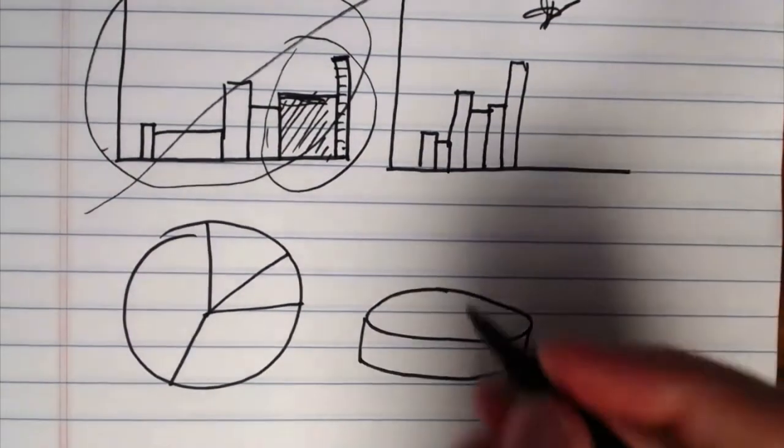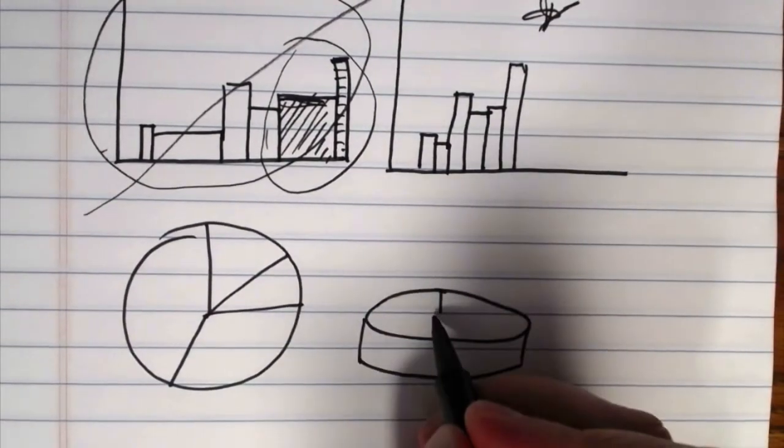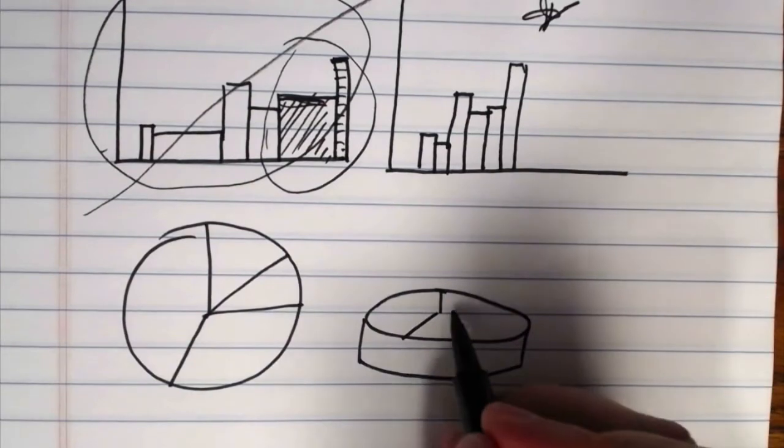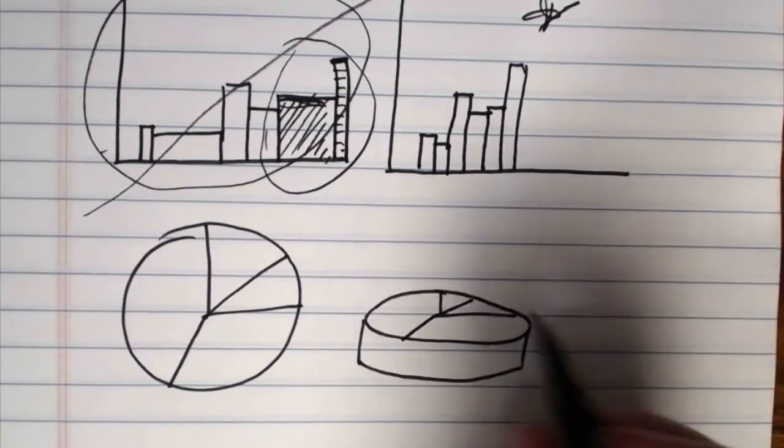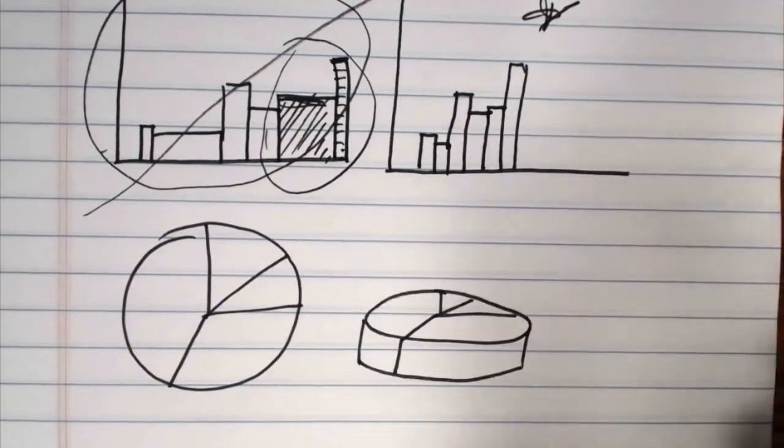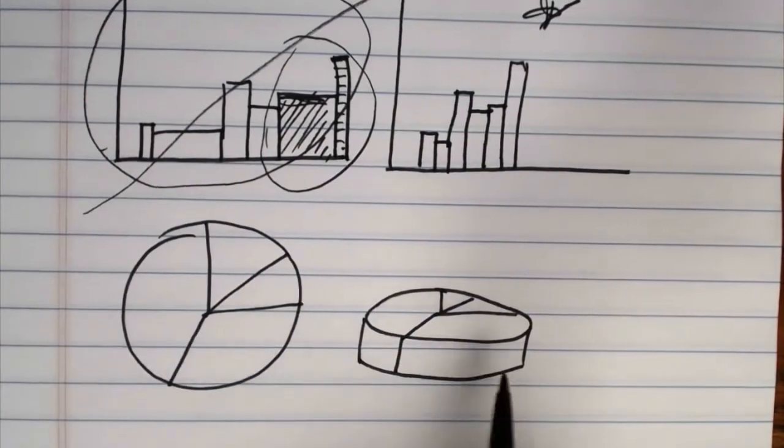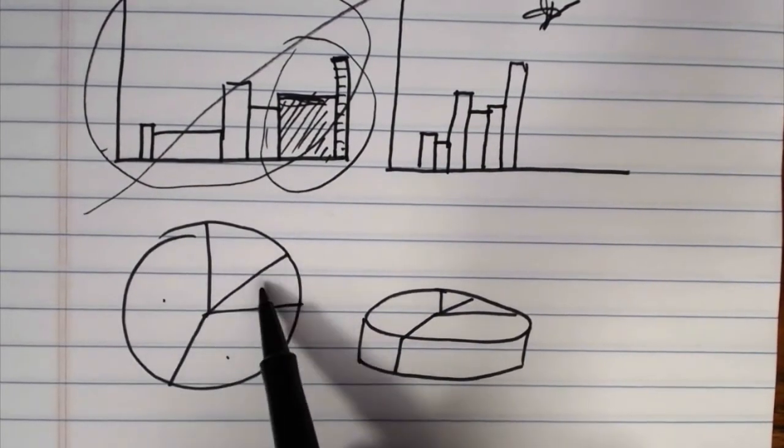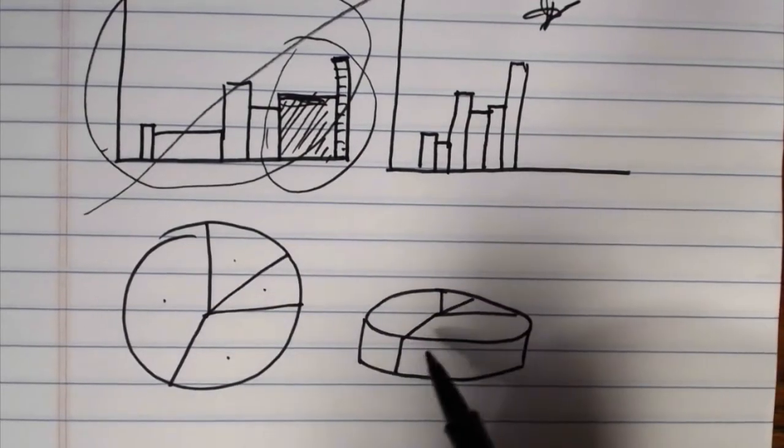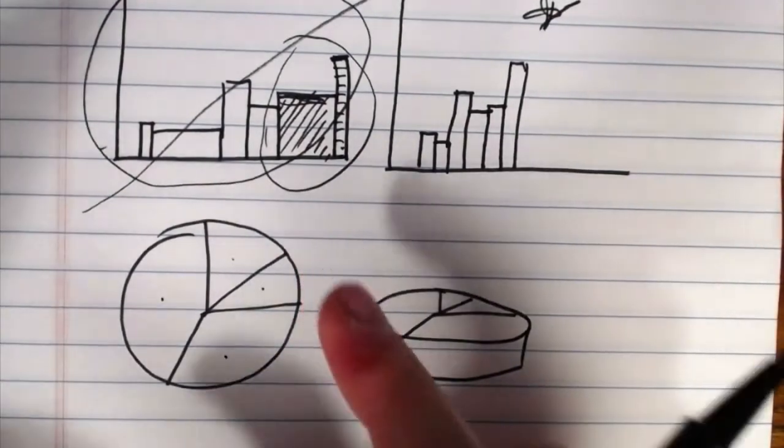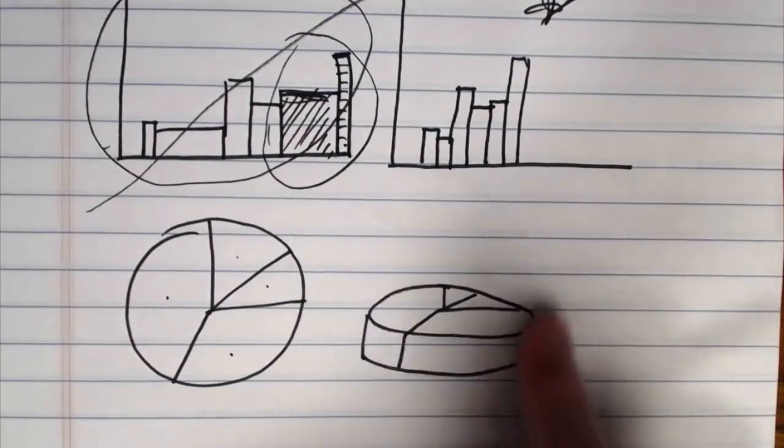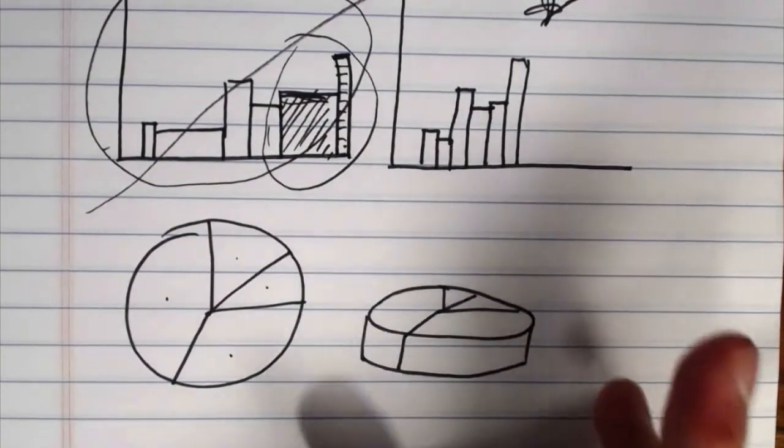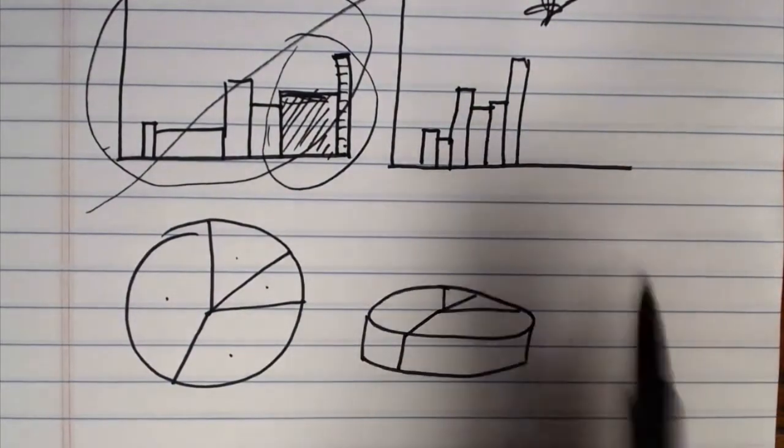Now what you'll frequently see people do with pie charts, this is an option in a lot of software programs, is they'll turn them on their side and then you might have this, for example.